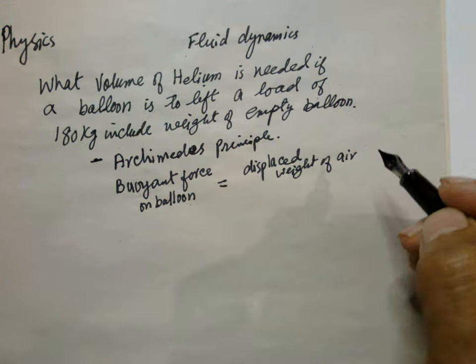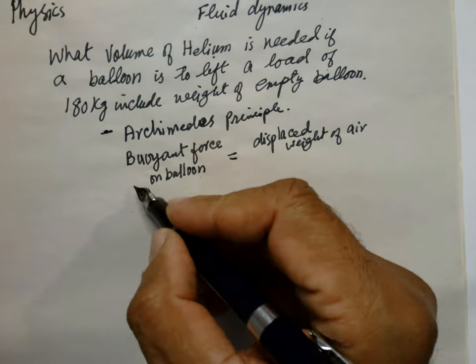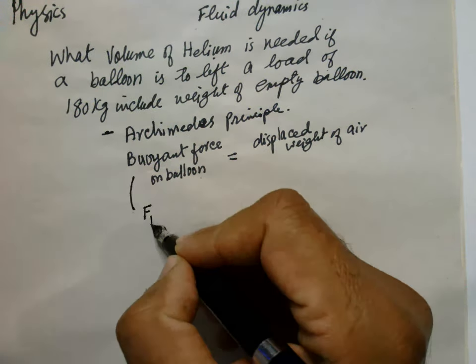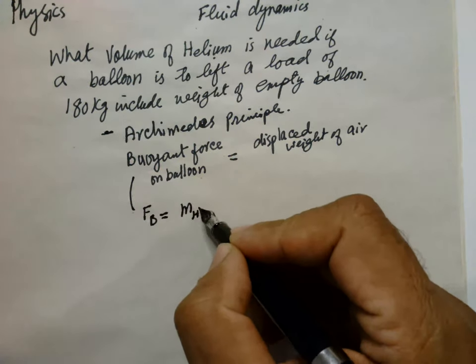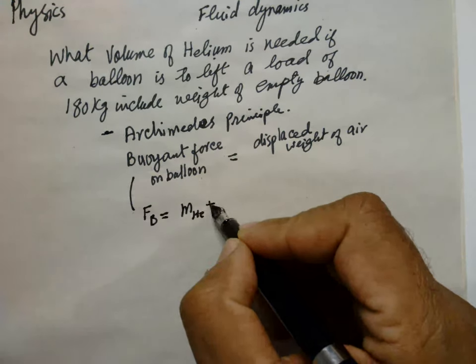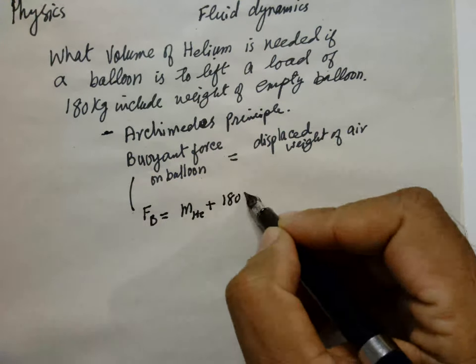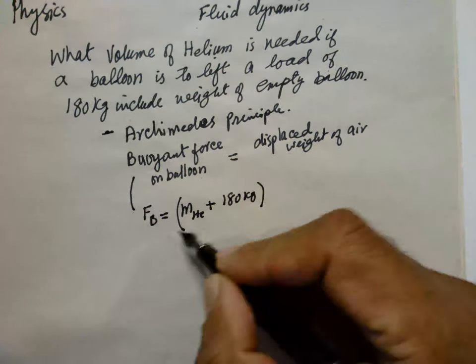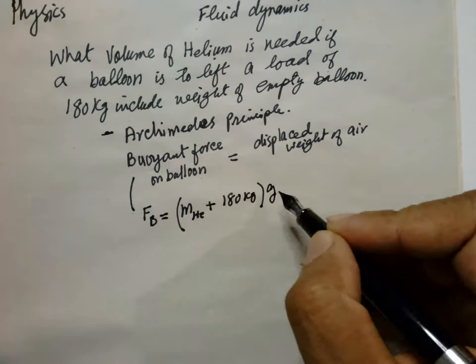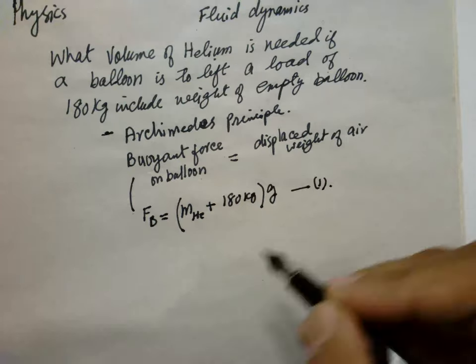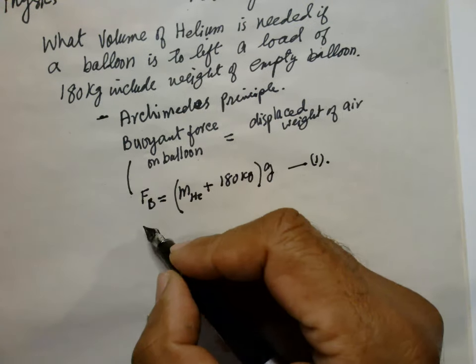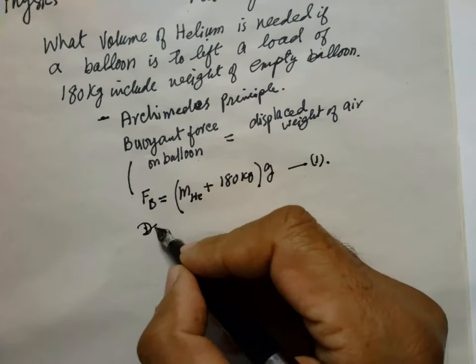The buoyant force on the balloon displaced by air, so buoyant force FB is equal to the mass of the helium plus 180 kg multiplied by g. FB equals mg, so this is equation 1.